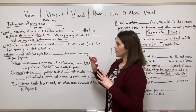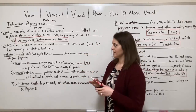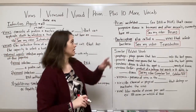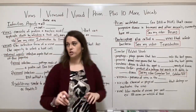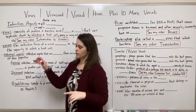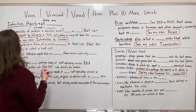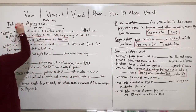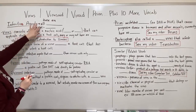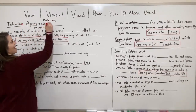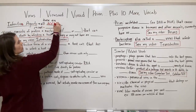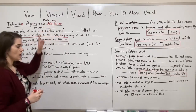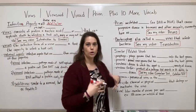First of all, I'm going to talk to you about several infectious agents: virus, virion, some sub-viral agents, prions, and bacteriophages. Now all of these infectious agents we are talking about today are acellular, meaning not composed of cells.